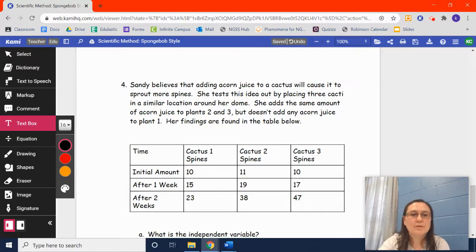Alright. Number 4. Last one. Sandy believes that adding acorn juice to a cactus will cause it to sprout more spines. She tests this idea out by placing 3 cacti in a similar location around her dome. She adds the same amount of acorn juice to plants 2 and 3, but doesn't add any acorn juice to plant 1. Her findings are found in the table below. So, cactus 1, she did not add anything to it. Didn't do anything different. It starts out with 10. After a week, it's sprouted 5. It's up to 15. After 2 weeks, there's a difference of 8. So, after adding stuff to cactus 2 and 3, we have 11 to 19. That's a difference of 8. 19 to 38, that doubled. That was a difference of 19 there. 10 to 17, that's 7. 17 to 47, that's 30. So, that's quite a bit.